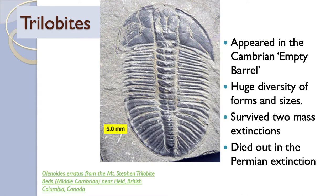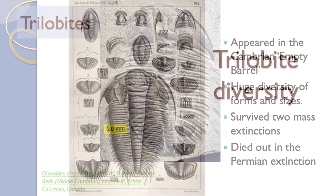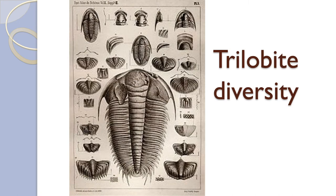The second group we're going to talk about that has survived many of the mass extinctions, but not all, are the trilobites. They appeared early in the Cambrian — they're part of the diversification of life that occurred in that period, which really gave rise to the theory of the empty barrel that we talked about a couple of lectures ago. They survived two mass extinctions, but then died out in the Permian mass extinction. They are particularly notable for having enormous diversity in early seas.